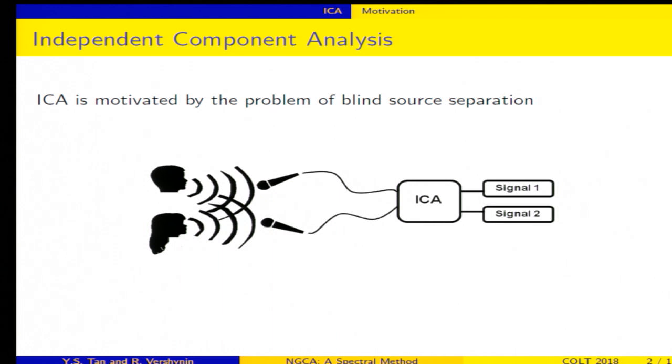So what's ICA? ICA is motivated by blind source separation, which is a problem that we faced during the poster session. So in the poster session, we're trying to listen to the poster presenter, but there are hundreds of other people who are talking at the same time. So we can't hear what they say, so we need to do some sort of separation.